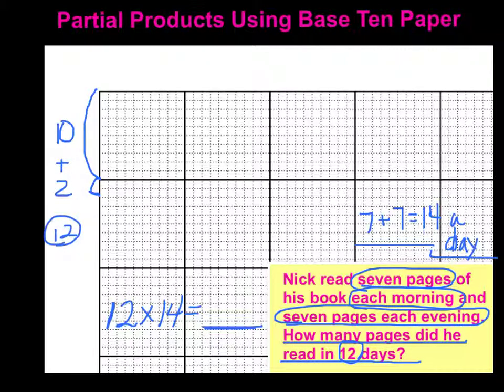So I have 12 days, and there are 14 pages read each day. So I'm going to do 10 and then carefully mark my 14 right here. I mean my 4. So there's 10 plus 4. And this is a multiplication.